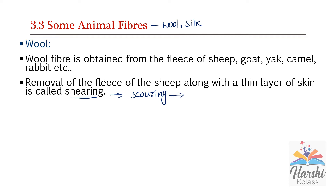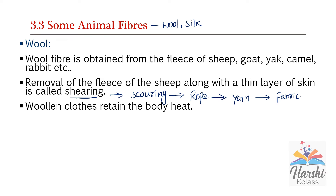Once the fleece is cleaned, it is sent into a machine where the wool fibers are combed into a sheet and then twisted, forming a rope-like structure. These ropes are twisted and stretched into yarn. With this yarn, woolen fabric and woolen clothes are made. Woolen clothes retain body heat because wool is fluffy and traps air, which is a bad conductor of heat. Australia is the leading producer of wool in the world.